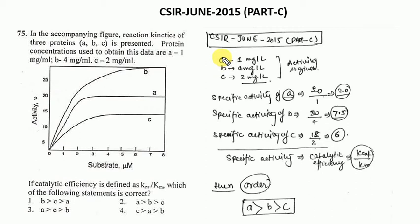A, B, C: three amounts. 1 mg per ml, 4 mg per ml, and 2 mg per ml. Activity is given here. The amount is being added. For A, if you see the peak point, the activity is around 20. So specific activity of A is 20 divided by 1, which equals 20. For B, the activity is around 30, so specific activity is 30 divided by 4, which equals 7.5.